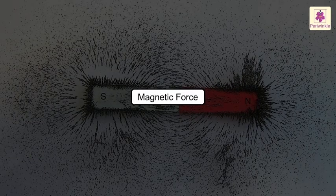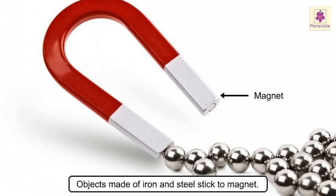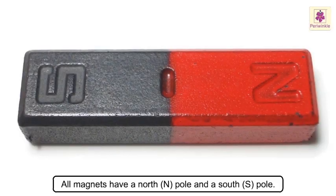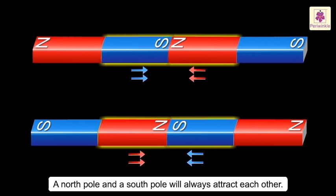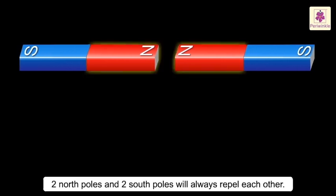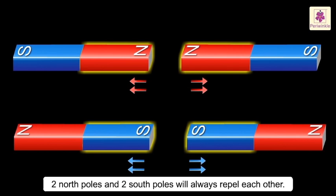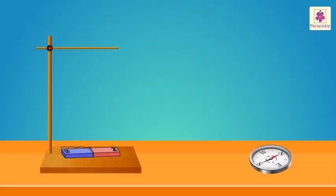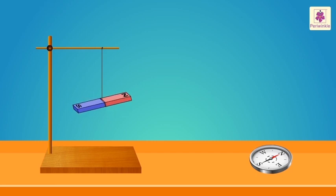Magnetic force. A magnet is not sticky like glue or sellotape, yet objects made of iron and steel stick to it. All magnets have a north pole and a south pole. A north pole and a south pole will always attract each other. But two north poles and two south poles will always repel each other. When a piece of magnet is hung from a piece of thread, it always turns in a north-south direction. This is because of the earth's magnetic field.